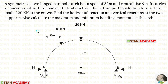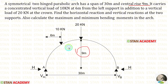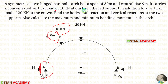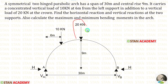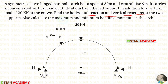Using the data available in the question, we can draw the diagram. The span of the arch is 30 meters and the rise is 9 meters. The arch carries a vertical load of 10 kilo Newton at 6 meters from the left support, and also a vertical load of 20 kilo Newton at the crown. We have to find the horizontal reaction, vertical reactions, and the maximum and minimum bending moments in the arch.